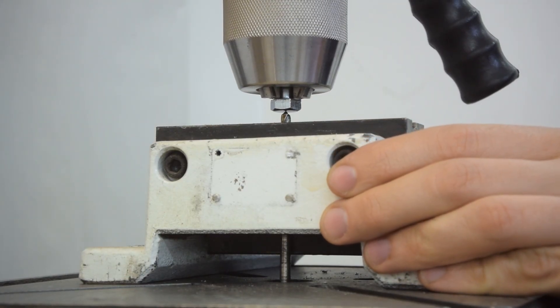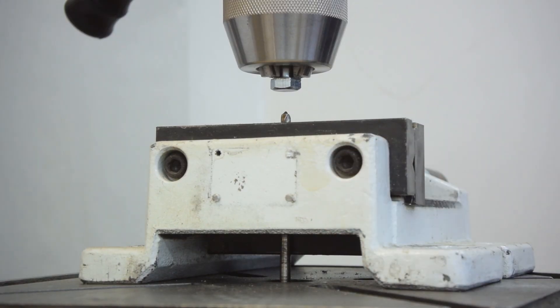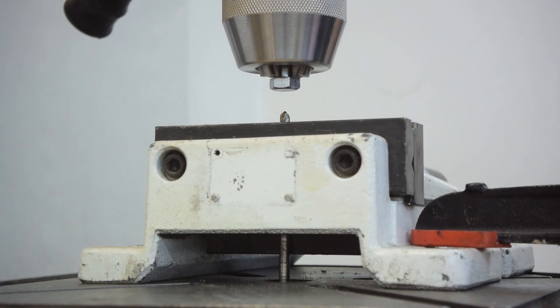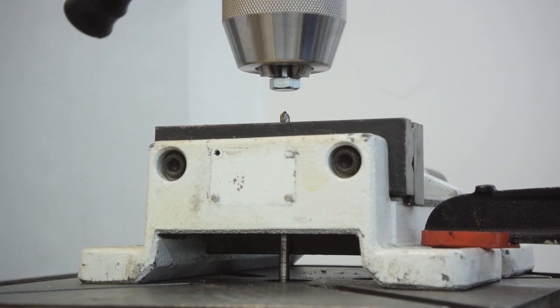And then you wanna lock down the vise to the drill press table. Now the vise basically became our tail stock and the drill our little stubby center drill.